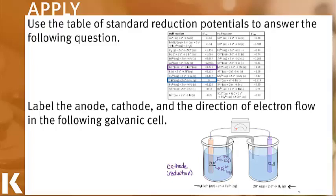For this reduction reaction, iron(III) ions are gaining an electron and being reduced to iron(II) ions. This means that the right side of my cell is going to be the anode where oxidation occurs. In this reaction, we have hydrogen gas losing electrons and going to 2 hydrogen ions.